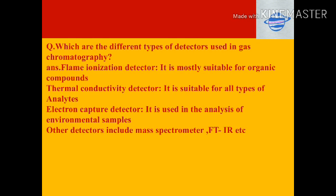Thermal conductivity detector: suitable for all types of analytes. The detector contains two resistors in identical heated chambers — one surrounded by the column effluent gas, the other by identical gas with identical flow but not passed through the column. When the column effluent contains other molecules, it conducts heat slightly differently, giving the resistor a slightly different temperature, which produces a signal indicating a foreign substance is eluting.